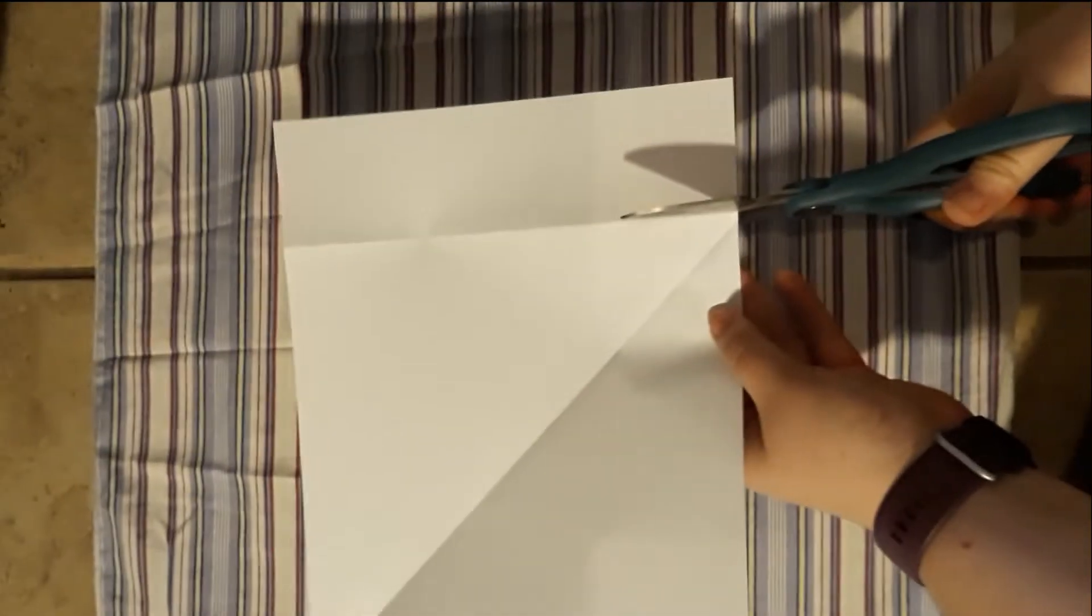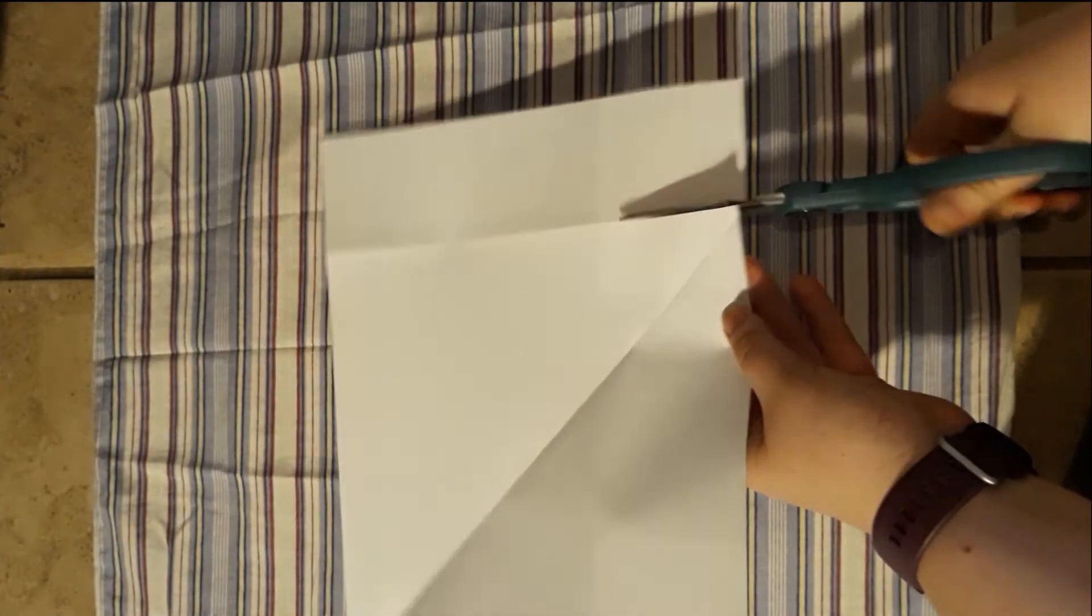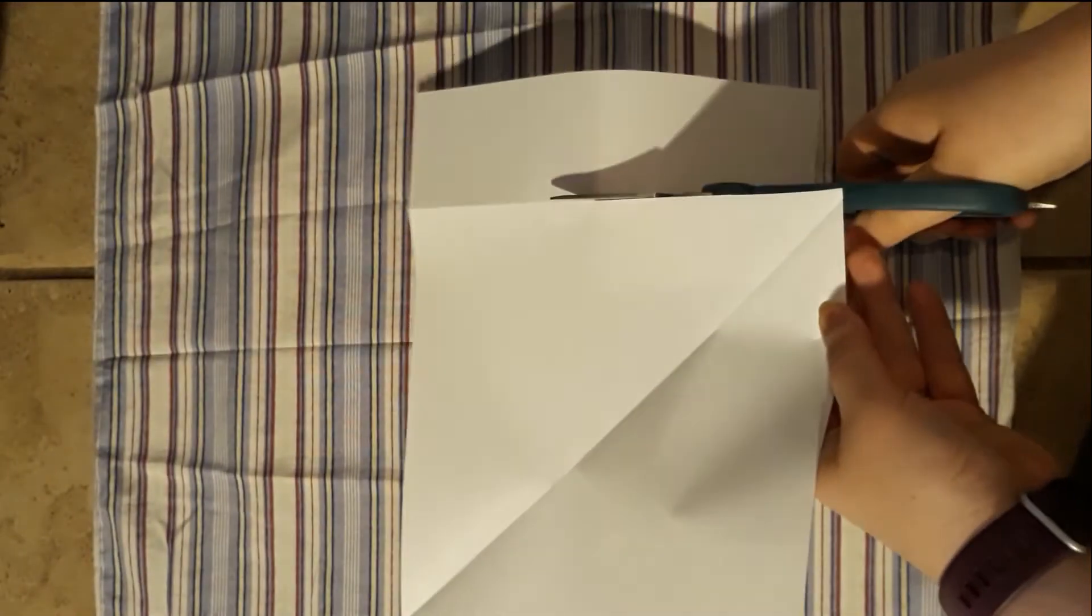Now you're going to take your scissors and cut off the rectangular edge like I'm doing here. You can toss that piece to the side since that will not be part of your tangram.